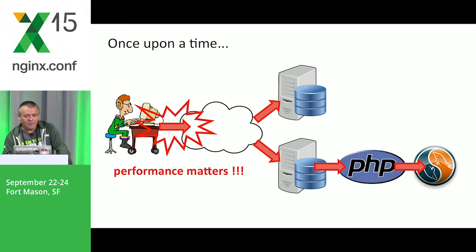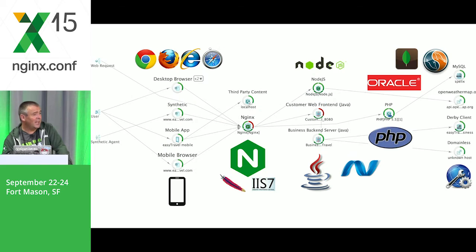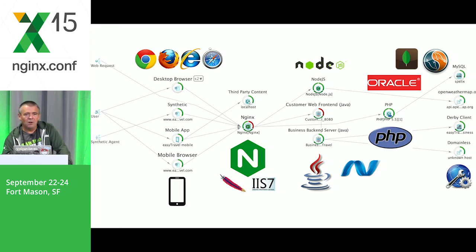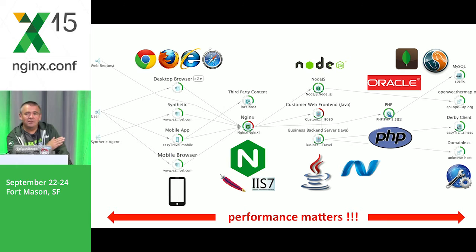During the years, these environments have changed. We now have much more complex environments using different tiers talking to each other, different technologies, different web servers, different languages in the back-end, different databases. But also on the front-end, different browsers offering different functionality — we all know that Internet Explorer behaves differently than Firefox. On the other hand, we have external web services we are connecting to. But still, performance matters — not just at one part of the application, but through the entire stack.